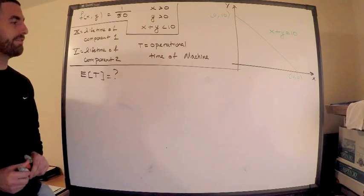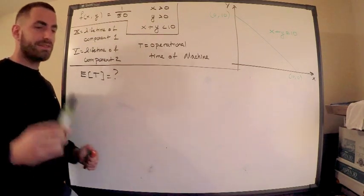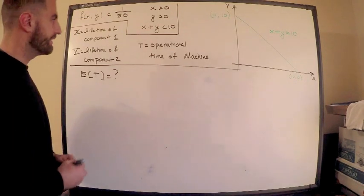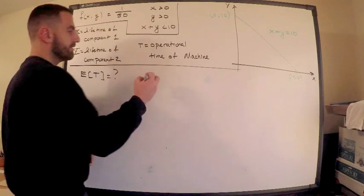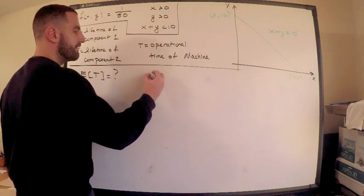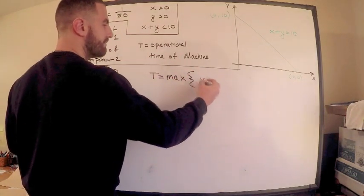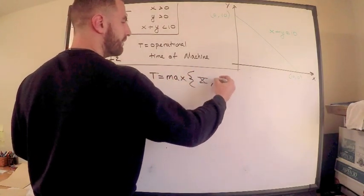So what is t? t is the operational time of the machine. And the question says that the machine operates as long as one of the components is working. If you think about it for a second, if these are my lifetimes of each component individually, then t must be the max. It's the max lifetime. It's the max between x and y.